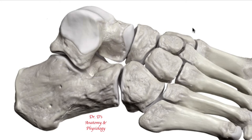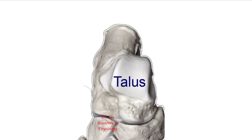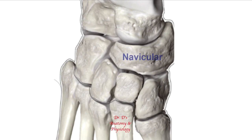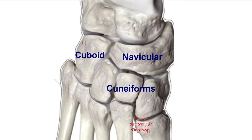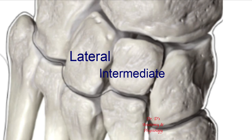Let's look at the foot from a superior view and review all seven bones. Here is the smooth articular surface of the talus that forms the ankle joint. The calcaneus is underneath and forms the heel. From above you can see why the navicular bone reminded the anatomist of a little boat. On the lateral side you again have the cuboid. In front of the navicular and medial to the cuboid you have the cuneiforms, which are named according to their relative position in the foot: the lateral cuneiform, the intermediate cuneiform in the middle, and the medial cuneiform.